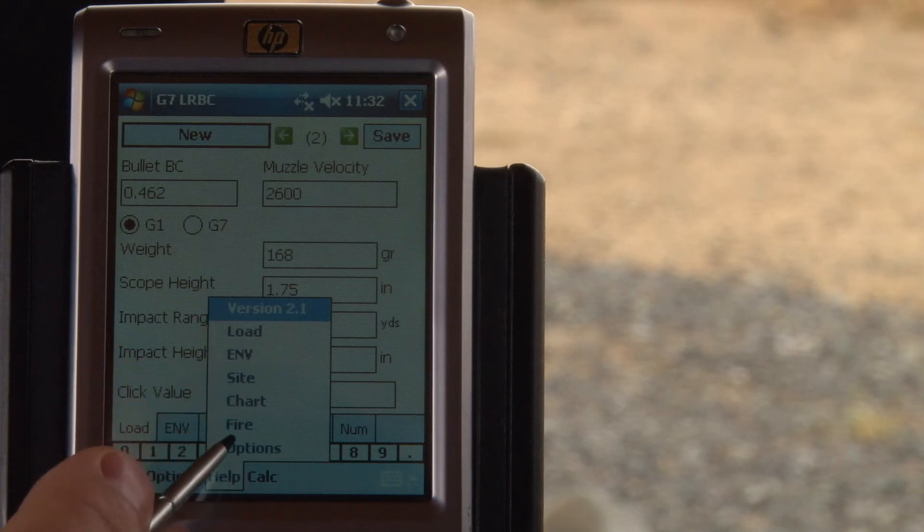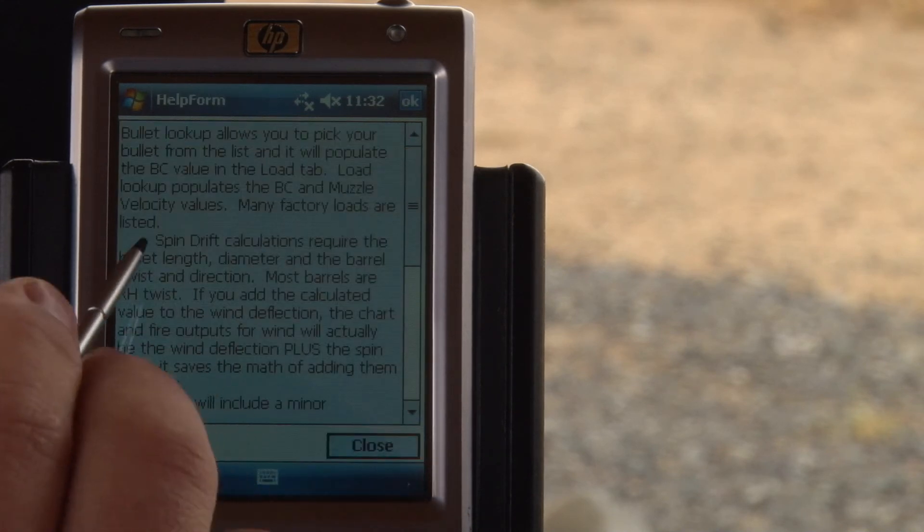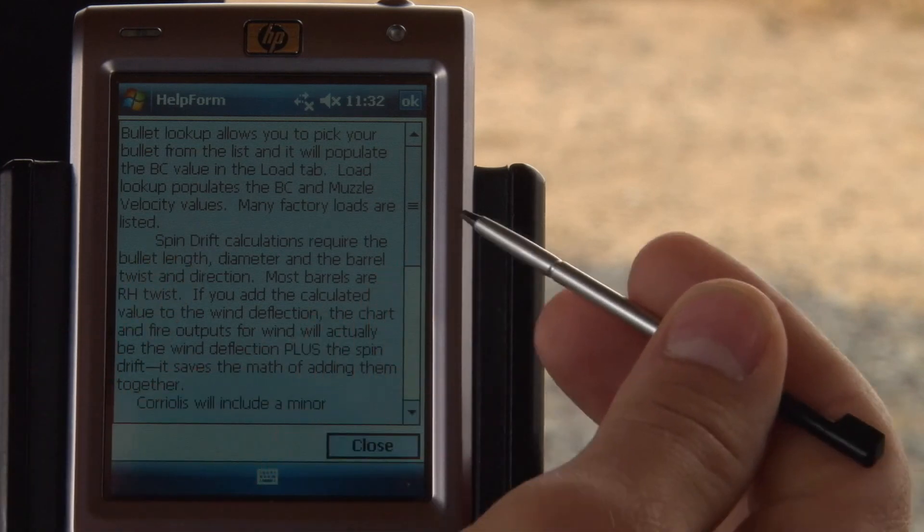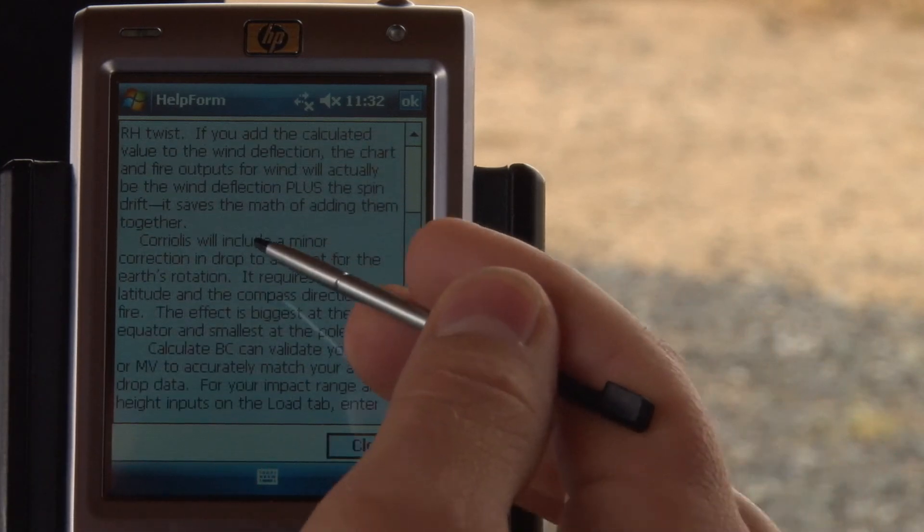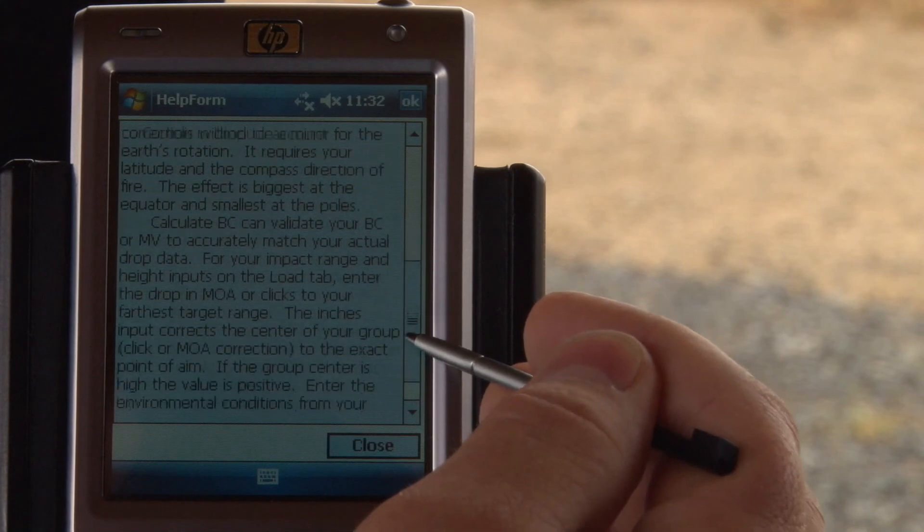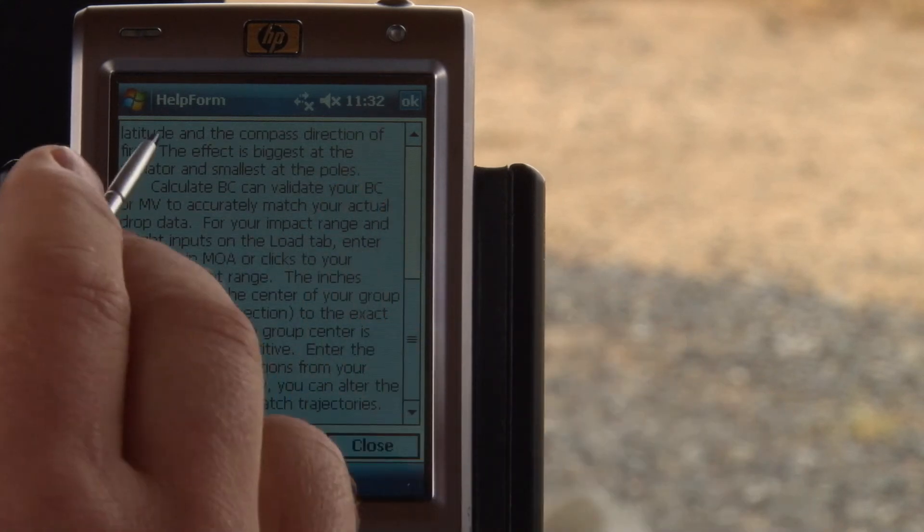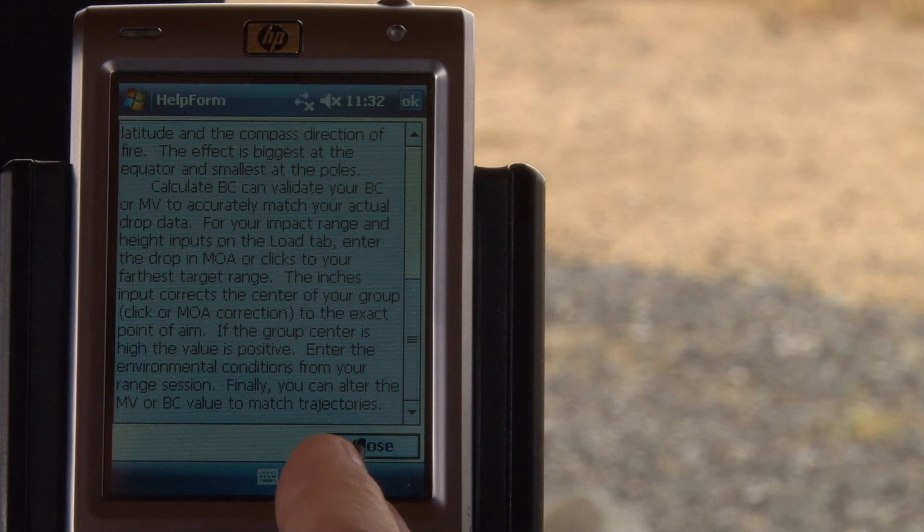There are a set of help files available for every page. Let's say we look at the options and it will tell you about spin drift calculations, what type of inputs for Coriolis, what type of inputs. And then there's your calculate BC. That's your trajectory validation.